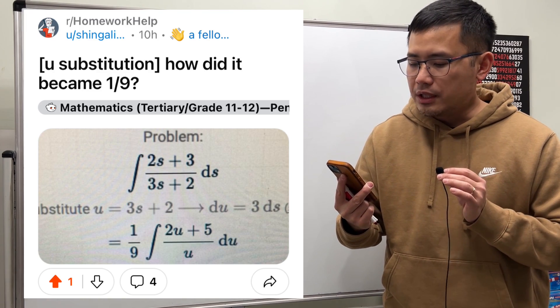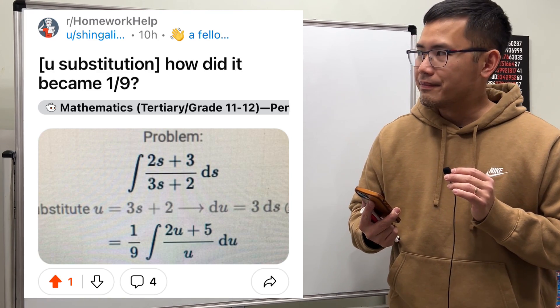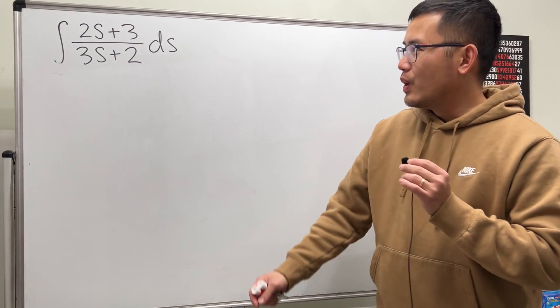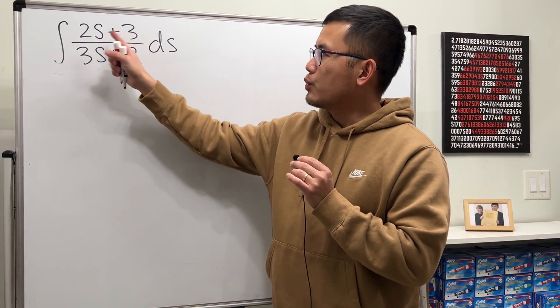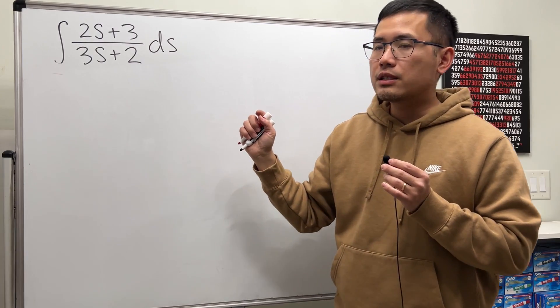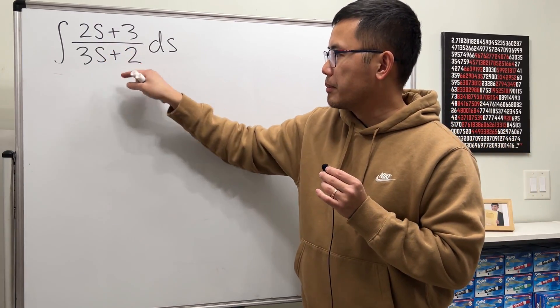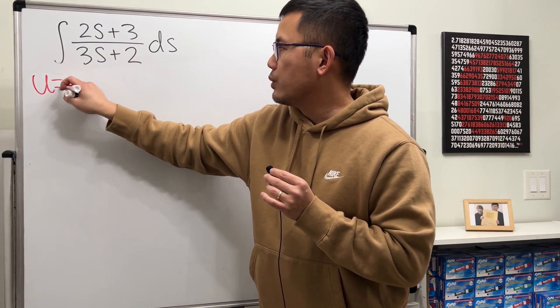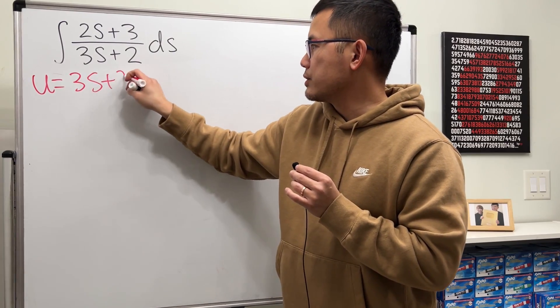U substitution. How did it become 1 over 9? Okay, let's have a look. First, we have the integral 2s plus 3 over 3s plus 2 ds. Let's go ahead and put u equal to the denominator. So u is equal to 3s plus 2.